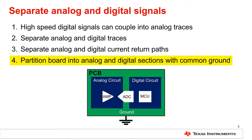It is important to note that this does not mean two independent ground planes. While the return current paths for analog and digital signals should be separated, make sure that the analog and digital grounds are still tied together with a solid ground plane. There should be only one ground node. We will cover grounding in more detail shortly.